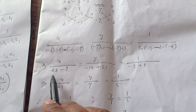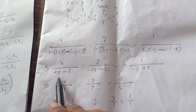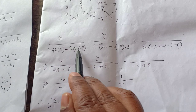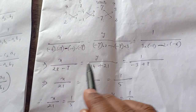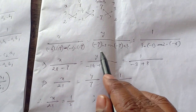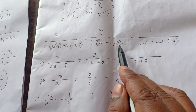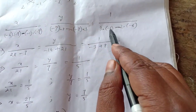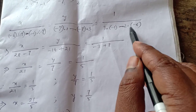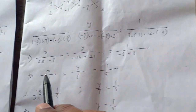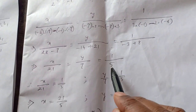Now simplifying: minus 4 times minus 7 is 28, minus (minus 1 times minus 7) gives minus 7, so that denominator is 21. For Y: minus 7 times 2 is minus 14, minus (minus 7 times 3) gives plus 21, so that is 7. For 1: 3 times minus 1 is minus 3, minus (2 times minus 4) gives plus 8, so that denominator is 5.